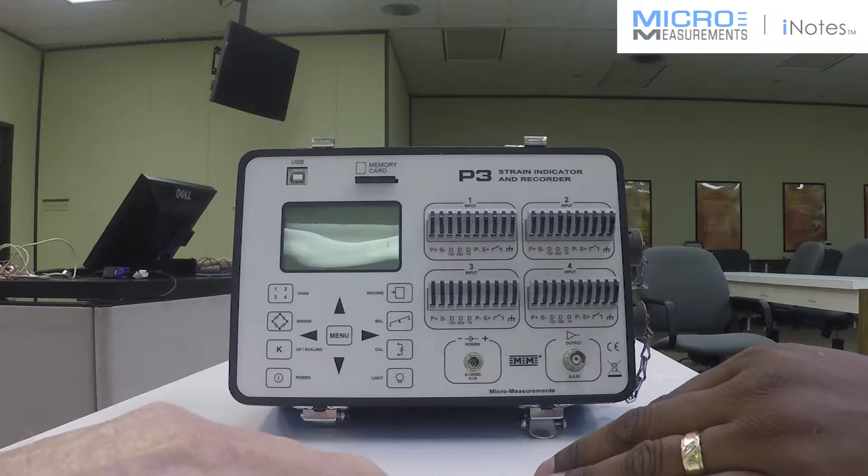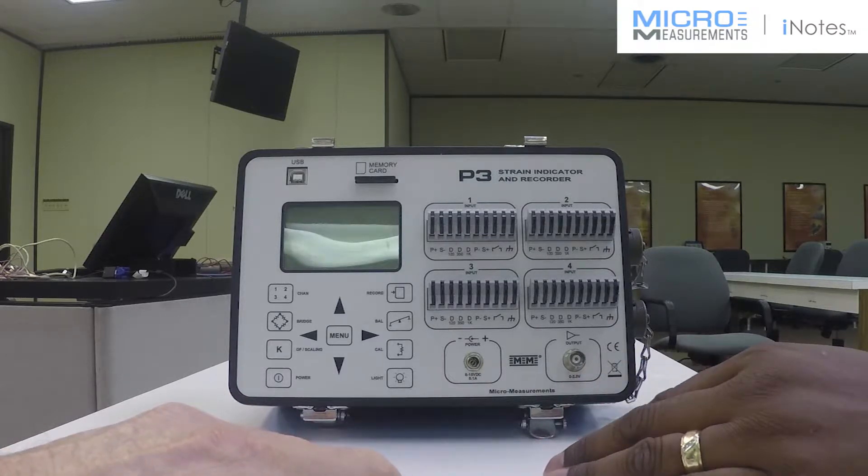And what type of data can you read with it? Well, if you're talking about strain gauge based inputs, you're talking about quarter, half, or full bridge circuits.